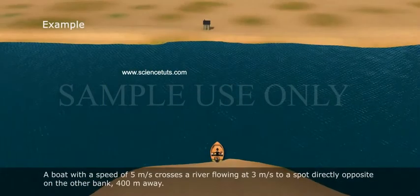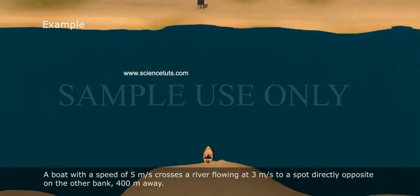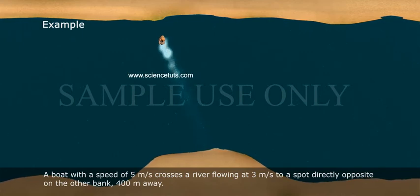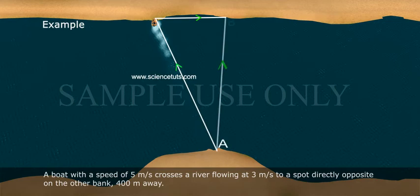Example: A boat with a speed of 5 m/s crosses a river flowing at 3 m/s to a spot directly opposite on the other bank, 400 m away.